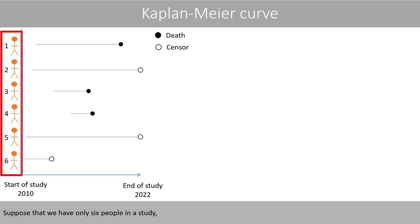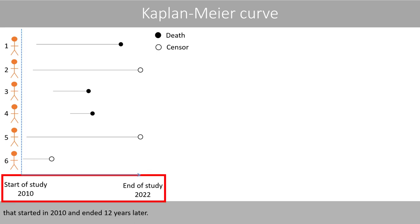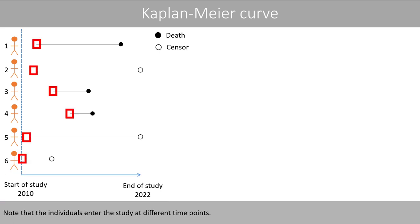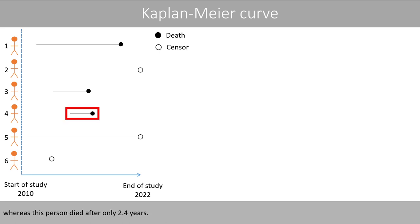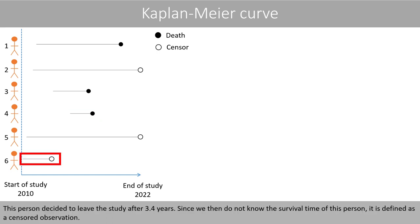Suppose that we have only six people in a study that started in 2010 and ended 12 years later. Note that the individuals entered the study at different time points. This person survived 8.8 years after entering the study, whereas this person died after only 2.4 years. This person decided to leave the study after 3.4 years. Since we do not know the survival time of this person, it is defined as a censored observation.